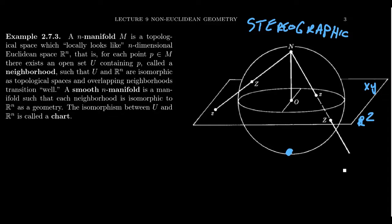The real projective plane we talked about in the previous video is also an example of a 2-manifold. As we talk about non-Euclidean geometry in this video, what we're really interested in are these 2-manifolds — geometries that are almost Euclidean, that is, locally Euclidean. So locally, it looks like lines are parallel to each other in a unique manner, but when we look at the global behavior, it could be that lines always intersect, like on the sphere.